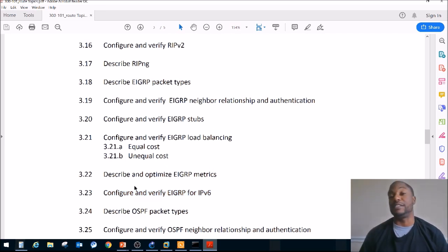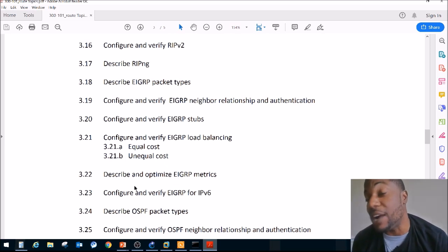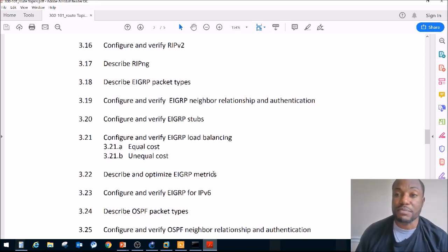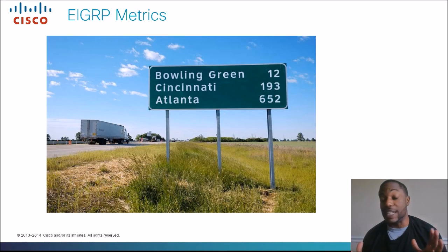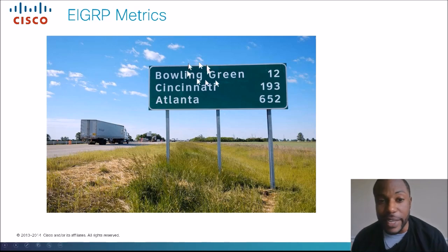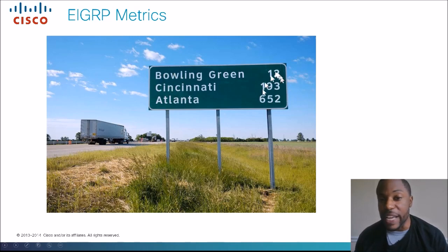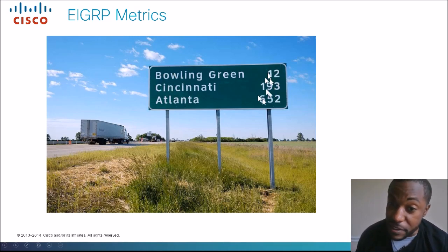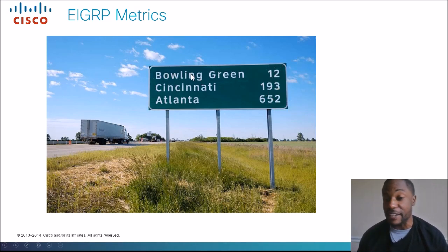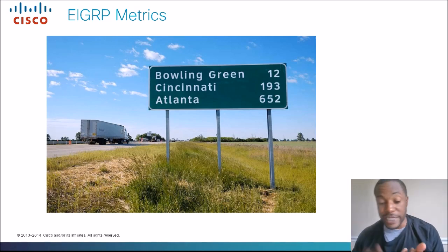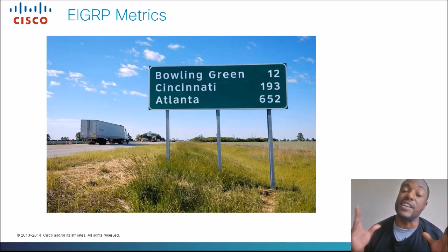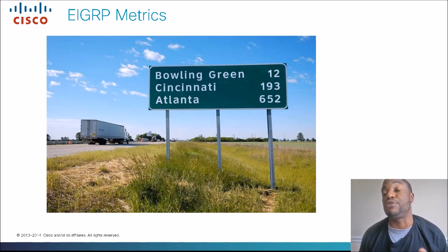Y'all know I like to compare networking to roads and highways — I say this throughout the series multiple times. So a metric: I like to think of metrics like the mileage on a road sign. You've got destinations on the left-hand side and mileage showing how far it takes to get there. Think of this mileage as the metric to get to our destination. Each type of routing protocol — EIGRP, OSPF — they all use different metrics. Today we're going to discuss how EIGRP calculates these metrics.